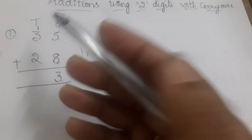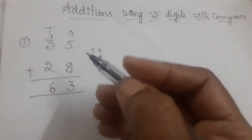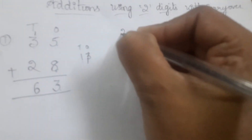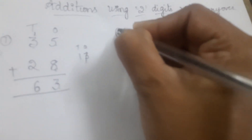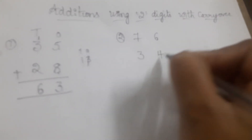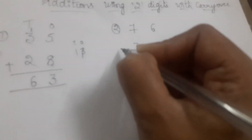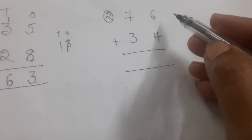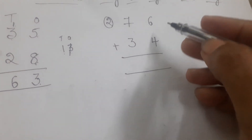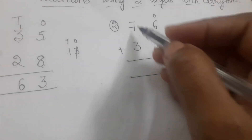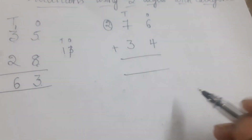Open 2 fingers. 4, after 5, 6. Write 6 here. Second problem: add 76 with 34. In the ones column, two numbers are there — six and four. Tens column also has two numbers — seven and three.